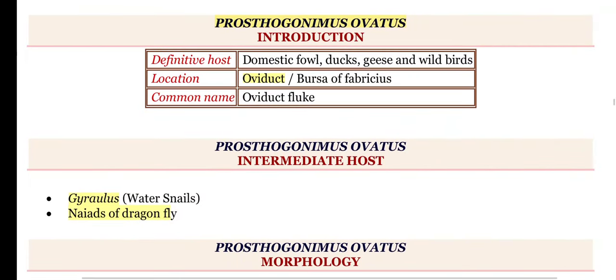In this video, we will be discussing another fluke, Prostogonimus ovatus. The definite host for this fluke is birds such as domestic fowl, ducks, geese, and sometimes wild birds. This fluke is located in the oviduct, or sometimes the Bursa of Fabricius. Therefore, this fluke is also called the oviduct fluke.